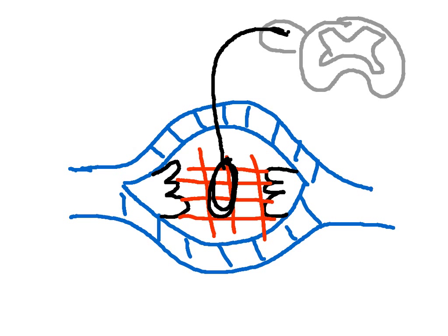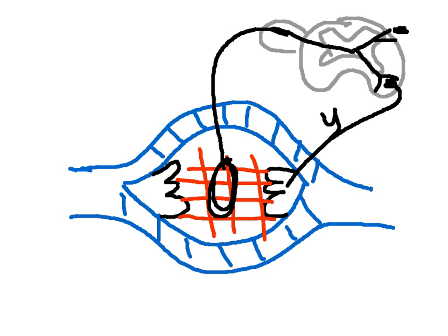The signal goes through the dorsal root ganglion and then into the spinal cord, where it synapses onto two motor efferent neurons. One is the gamma motor neuron, which innervates the intrafusal fibers. The other is the alpha motor neuron, which innervates the extrafusal fibers.